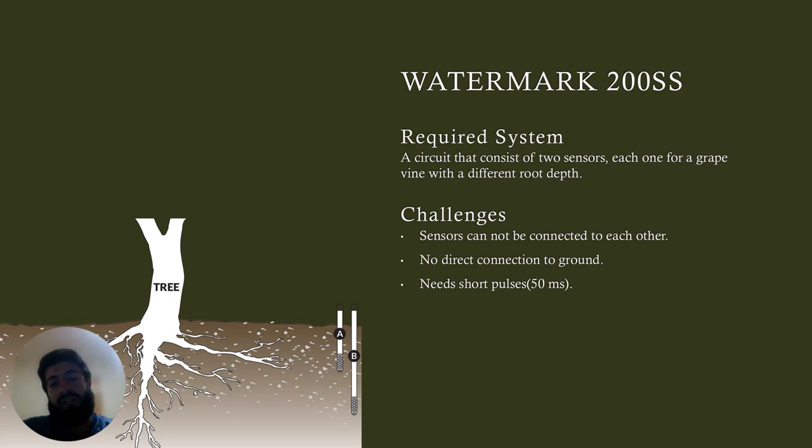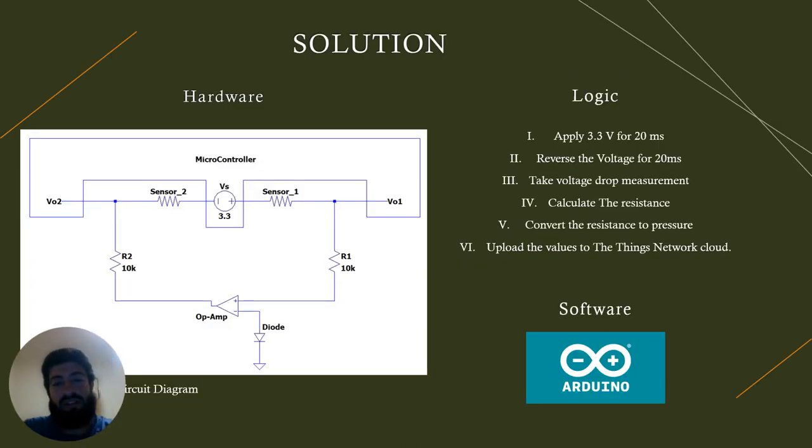When designing the Watermark sensor system I had to consider that each grapevine had roots at different depths underground so I had to have two sensors in my circuit. That's challenging because I cannot have two sensors directly connected to each other. What's also challenging is that no sensor should have a ground connection and besides that the powering of the sensor needs a special technique. To power up the sensor we need to apply short electrical pulses to sensors with reversing the direction in less than 50 milliseconds.